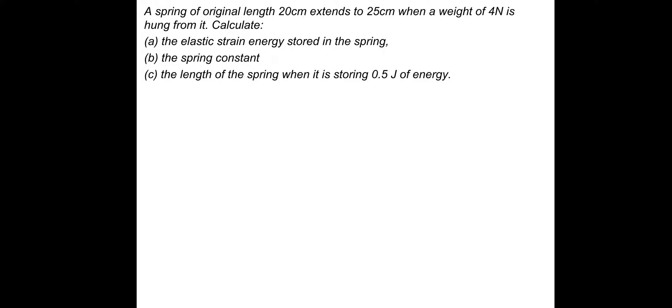A spring of original length 20 centimetres extends to 25 centimetres when a weight of 4 newtons is hung from it. So first of all, let's do A. Calculate the elastic strain energy stored in the spring. Part A, so the elastic strain energy is half force times extension. So that's 0.5 times the force of 4 newtons, which is the weight, multiplied by the extension. And it extends from 20 to 25 centimetres, so that's 0.05 metres. If you calculate that, you should get 0.1 joules of energy.